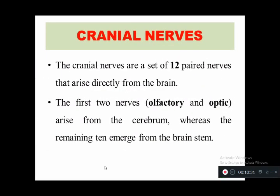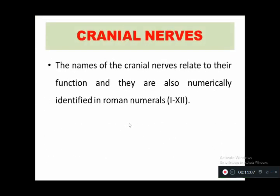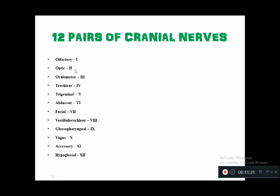The third question is cranial nerves, one of the most frequently asked questions in university exams. Cranial nerves arise from the brain and supply all parts of the body. There are 12 pairs of cranial nerves. The first two — olfactory and optic — arise from the cerebrum, while cranial nerves 3 to 12 come from the brain stem. They are represented with Roman numerals. The 12 cranial nerves are: olfactory, optic, oculomotor, trochlear, trigeminal, abducens, facial, vestibulocochlear, glossopharyngeal, vagus, accessory, and hypoglossal.